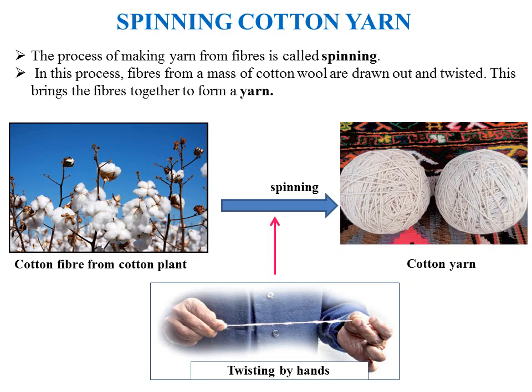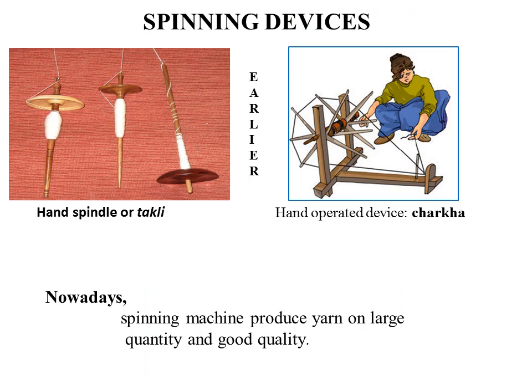In spinning, fibers from a mass of cotton wool are drawn out and twisted, which brings fibers together to form a yarn. As you can see in the picture, cotton fiber from the cotton plant is drawn out by the process of ginning, and after ginning, spinning is done by twisting the cotton fibers by hands to produce cotton yarn.